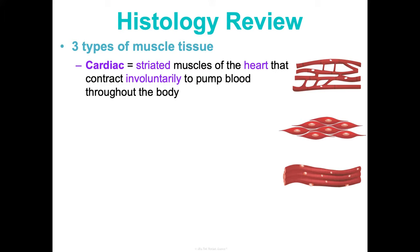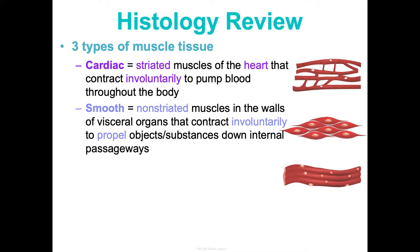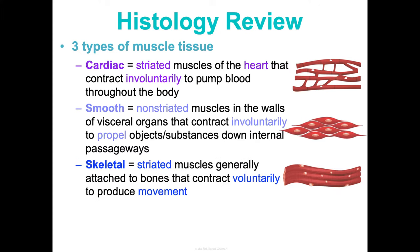Cardiac muscle contracts involuntarily to pump blood throughout your body. Smooth muscles are non-striated, make up the walls of your visceral organs, and also contract involuntarily to propel substances down internal passageways. The ones we'll really focus on in this concept are skeletal muscle tissues — striated muscles generally attached to bones that contract voluntarily to produce movement. That voluntary part is extremely important and makes the connection between the muscular system and the nervous system really critical.